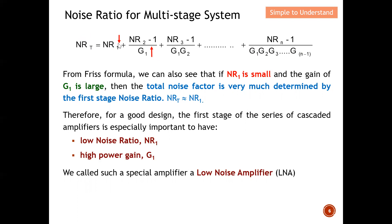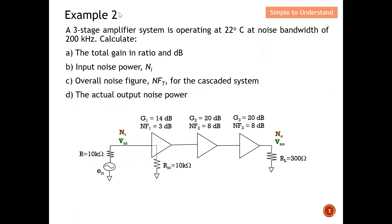Let's do another example. A three-stage amplifier system is operating at 22 degrees Celsius with a noise bandwidth of 200 kilohertz. Calculate: the total gain in ratio and decibel, the input noise power, the overall noise figure for the whole multi-stage system, and the actual output noise power. Let's do the total gain in ratio and decibel first.